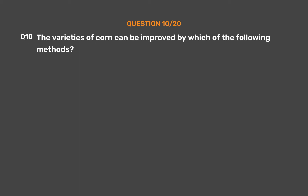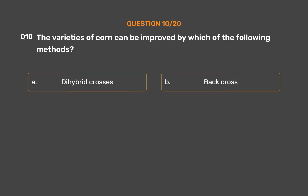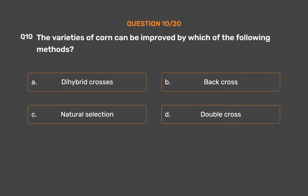Question number 10. The varieties of corn can be improved by which of the following methods? Option A: Hybrid crosses. Option B: Back cross. Option C: Natural selection. Option D: Double cross. The correct answer is Option D, Double cross.